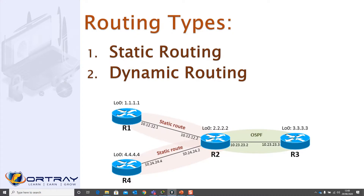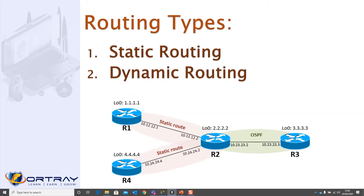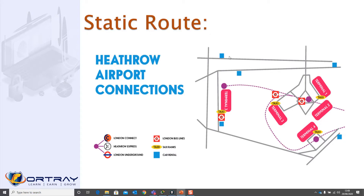As a network administrator, you configure which direction you need to go on your router. You have to manually configure the static route yourself. For example, if you are at Heathrow Airport, there is a map, and if you want to go from Terminal 3 to Terminal 2 you need to follow a particular direction — a direction you have already learned, not using Google Maps or any other navigation application.